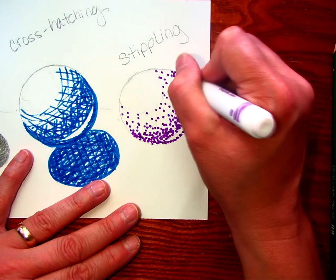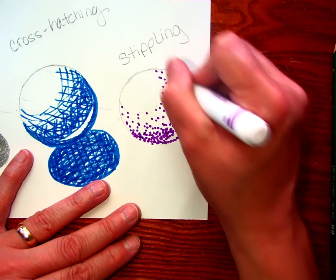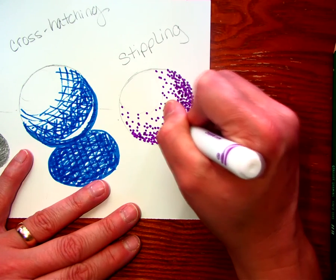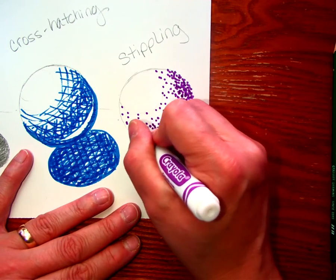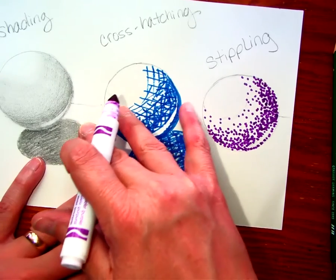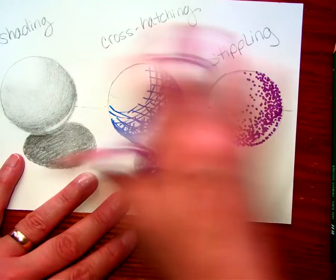Markers don't really blend. You can do shading with crayons, for sure, colored pencils, very easily. So if you're wanting to add shading to something, I would recommend using one of those types of materials to do the actual shading. But you can add value. This is all called value.